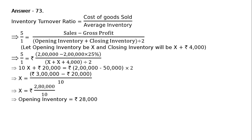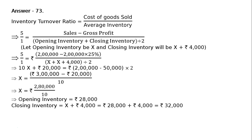Now we find closing inventory, which is x plus 4000. That is equal to rupees 28,000 plus 4000, which equals rupees 32,000. This is the final answer: opening inventory is rupees 28,000 and closing inventory is rupees 32,000.